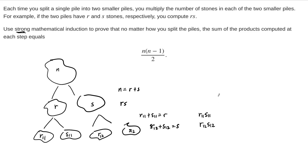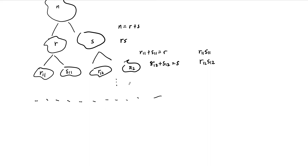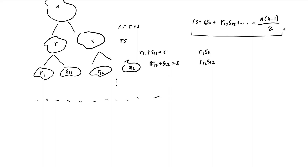We continue this process until we just have a bunch of single stones lying around, not in piles but separated entirely. Then we add up all the products: rs plus r11·s11 plus r12·s12, and so on. The claim is that this will always add up to the same sum of products, which is n times (n minus 1) over 2. This is what we want to prove.